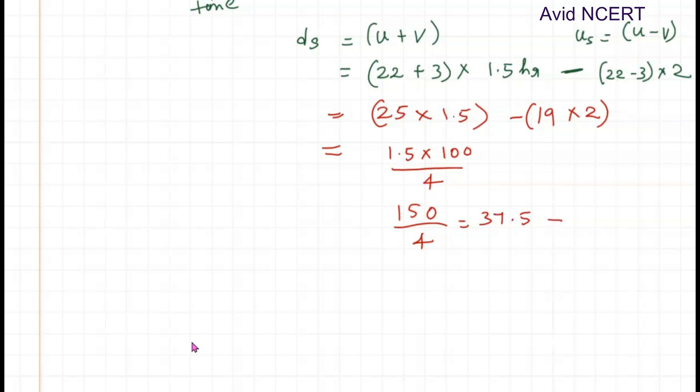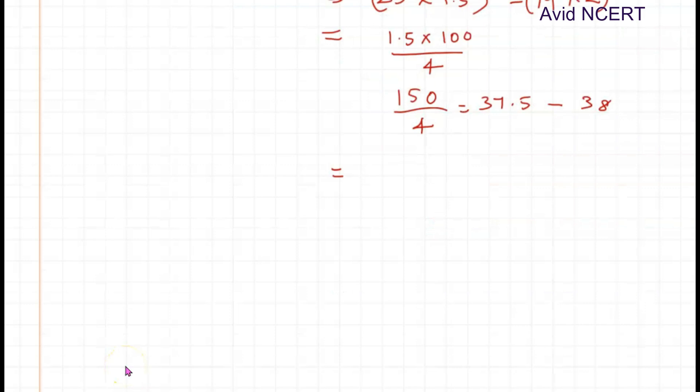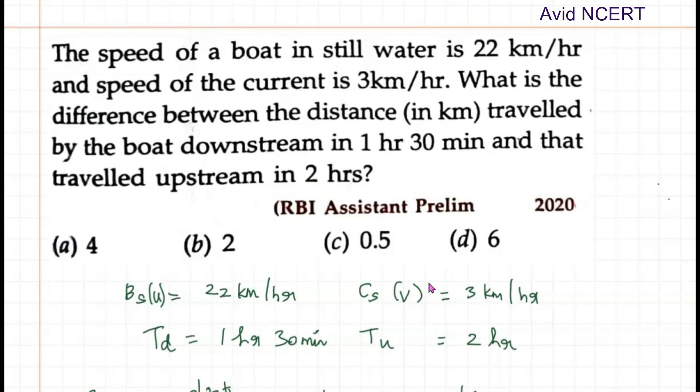So 37.5 minus 19 times 2 is 38, which equals negative 0.5 kilometers. So the difference in distance is 0.5 kilometers and the negative indicates the upstream. The boat traveled 0.5 kilometer less in the upstream compared to the downstream. The difference between the distance traveled by the boat downstream and upstream is 0.5 kilometers.